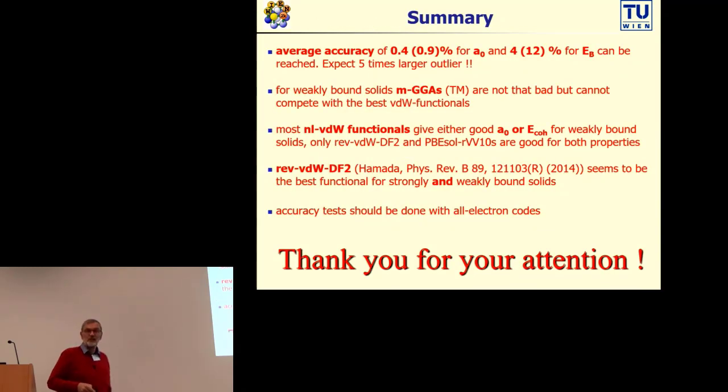Okay, this brings me to the summary. On average, you can expect an accuracy of half a percent in the lattice parameter and four or five percent for the binding energy in solids with a modern functional. For weakly bound systems, the error is twice or three times larger. But still, remember, these are average errors, and we always find outliers where the error can easily be five times larger than these values.